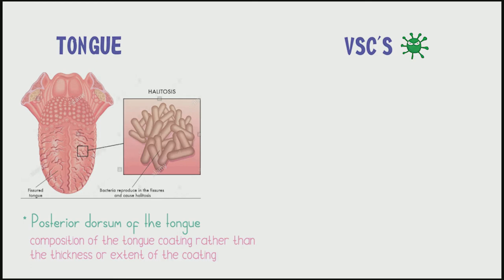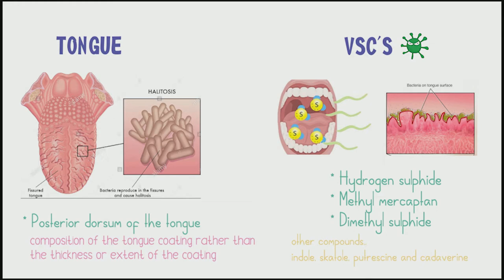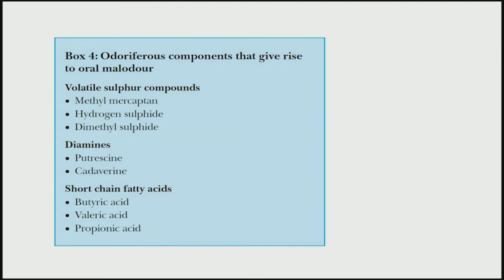Volatile sulfur compounds are produced through bacterial metabolic degradation of food debris, desquamated cells, salivary proteins, dental plaque, and microbial putrefaction. Examples include hydrogen sulfide, methyl mercaptan, and dimethyl sulfide, as well as other compounds such as indole, skatol, putrescine, and cadaverine. This figure lists the odoriferous compounds that give rise to halitosis. Remember the mnemonic: My Head PC Has A Very Powerful Broadband Internet.